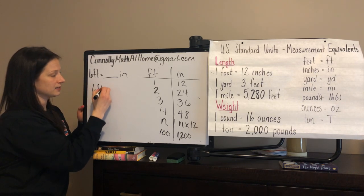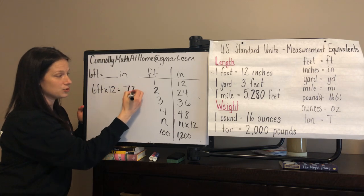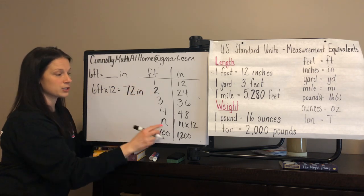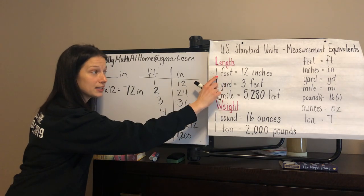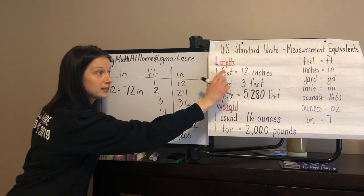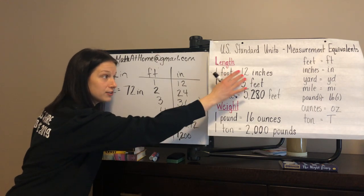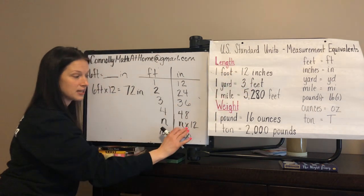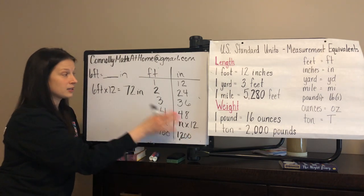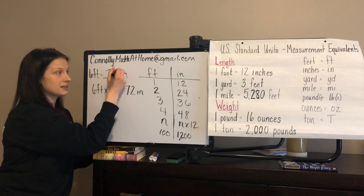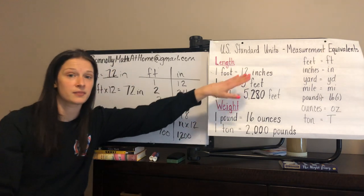Six feet times 12 will get us 72 inches, because we're following the rule that we developed. You can see one foot is one group of 12 inches, two feet is two groups of 12 inches, three feet is three groups of 12 inches. That's what the multiplication symbol stands for — groups of. That is how we go each time from feet to inches.